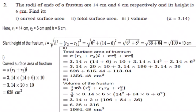Question number 2. The radii of ends of a frustum are 14 cm and 6 cm respectively and its height is 6 cm. Find its curved surface area, total surface area, and volume.